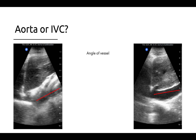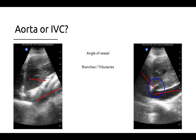A more definitive marker is the presence of branches or tributaries. The aorta has several anterior branches that take off just caudal to the liver, of which the celiac trunk and SMA are visualized here. The IVC, on the other hand, has a single large tributary in this area, which is the common hepatic vein, seen here draining from the liver into the IVC just before the IVC enters the right atrium.